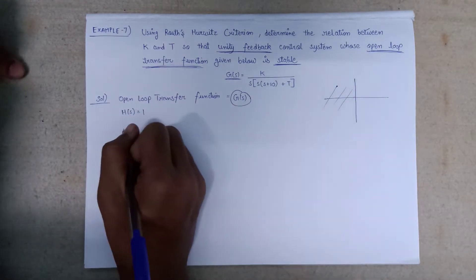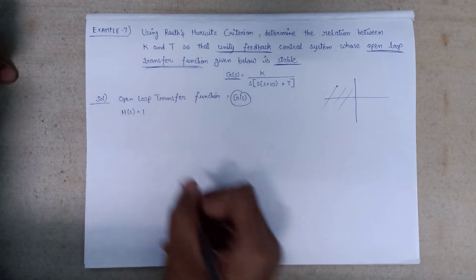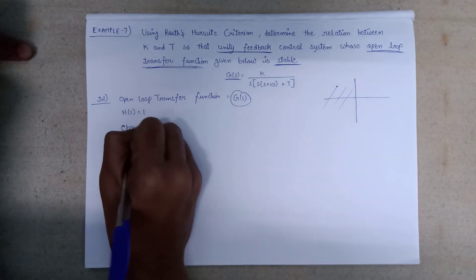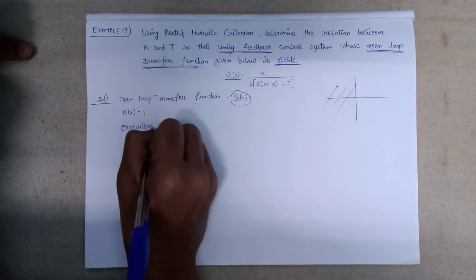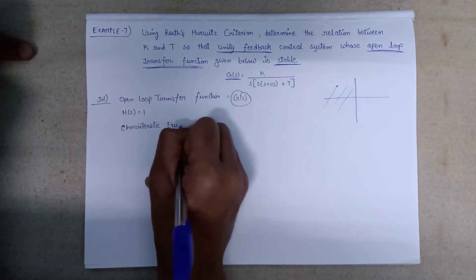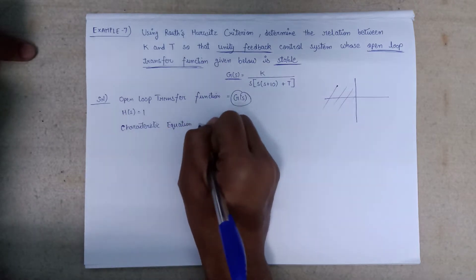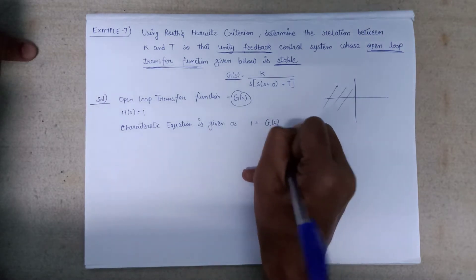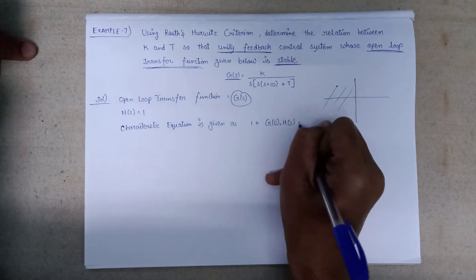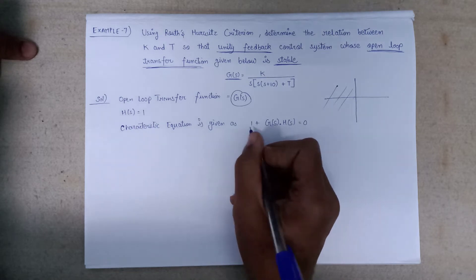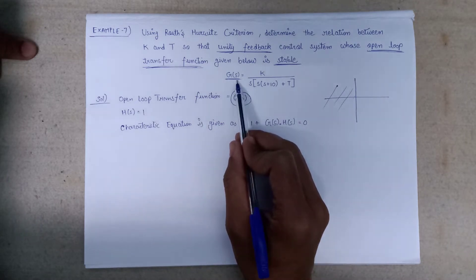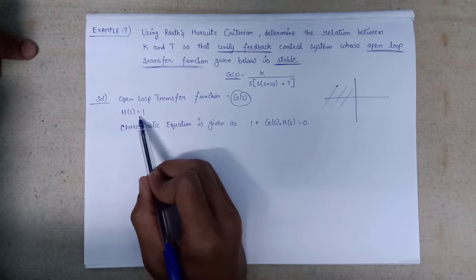Let's solve this question. First of all we will discuss the characteristic equation, on the basis of which we will form the Routh array. The characteristic equation is given by 1 + G(s)·H(s) = 0. In the question we are given G(s), and since unity feedback, H(s) = 1.